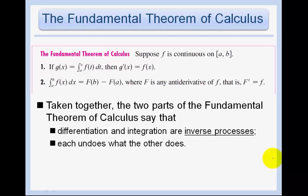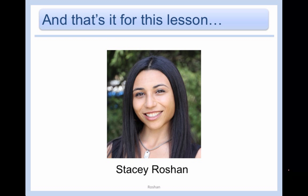There are two parts to the Fundamental Theorem of Calculus. We've covered Part 1. Part 2 states that the integral of f equals big F of b minus big F of a, where big F is any antiderivative of f — that is, big F prime equals little f. Taken together, both parts say that differentiation and integration are inverse processes, and each undoes what the other does. That is very key, and that's the end of this lesson — we'll be seeing a lot more of it.